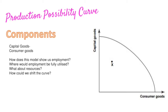If employment were fully utilized, every single person in the country would be working to their fullest capacity, meaning we would sit on the curve. The same applies to resources — if all resources are being utilized, we sit on the curve. The next thing to know is how we could shift the curve. If we increase all of those resources, we can push the whole curve outward, which would show economic growth — our whole economy is growing.